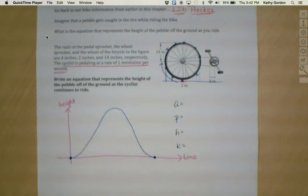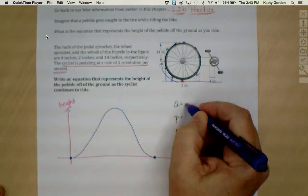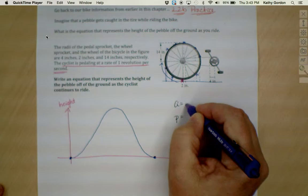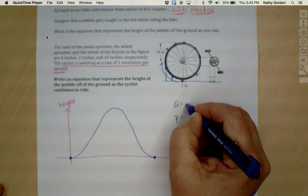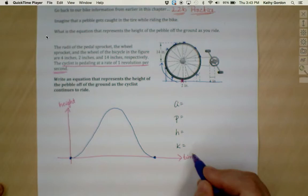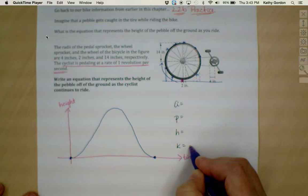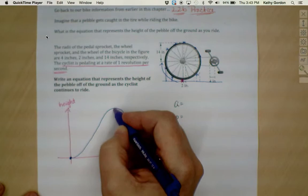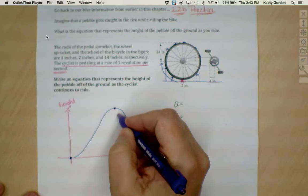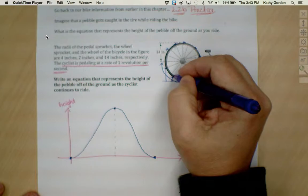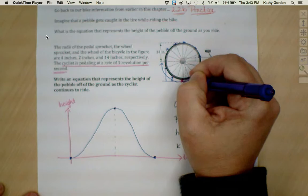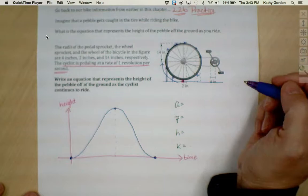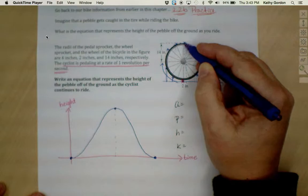Let's start putting some information together here. First of all, let's talk about A. In order to figure out A, since A is amplitude and amplitude is the distance from the sinusoidal axis to a max or min point, I need to know where the sinusoidal axis is. So I really actually need to think about K here first. Let's talk about distance. How far up is my pebble going to get? What's the maximum distance away from the ground that my pebble can get here?